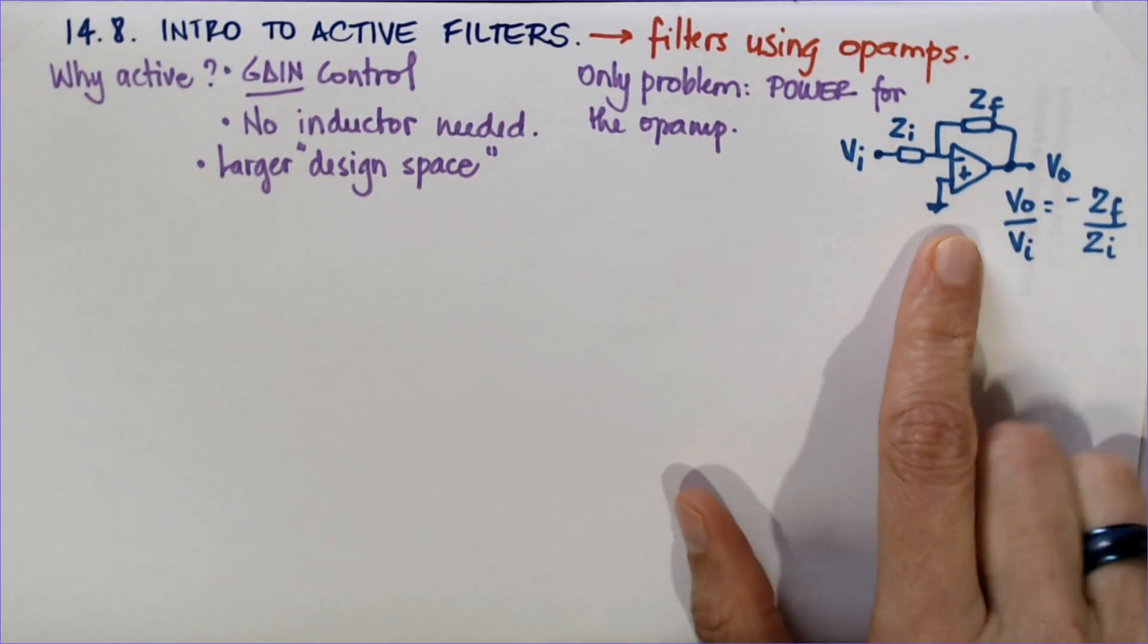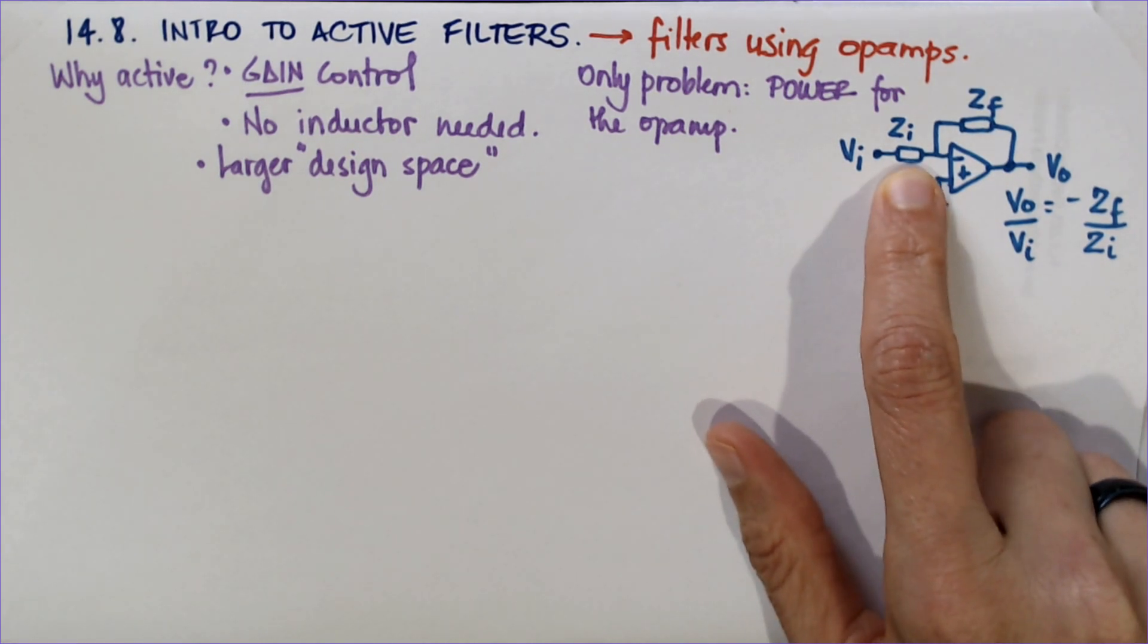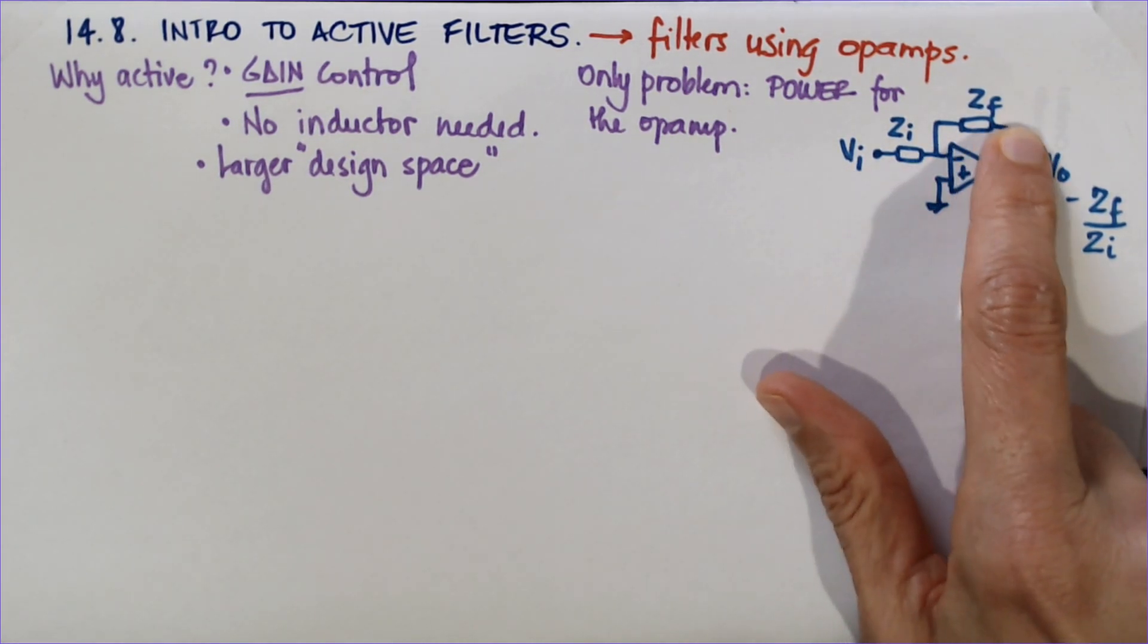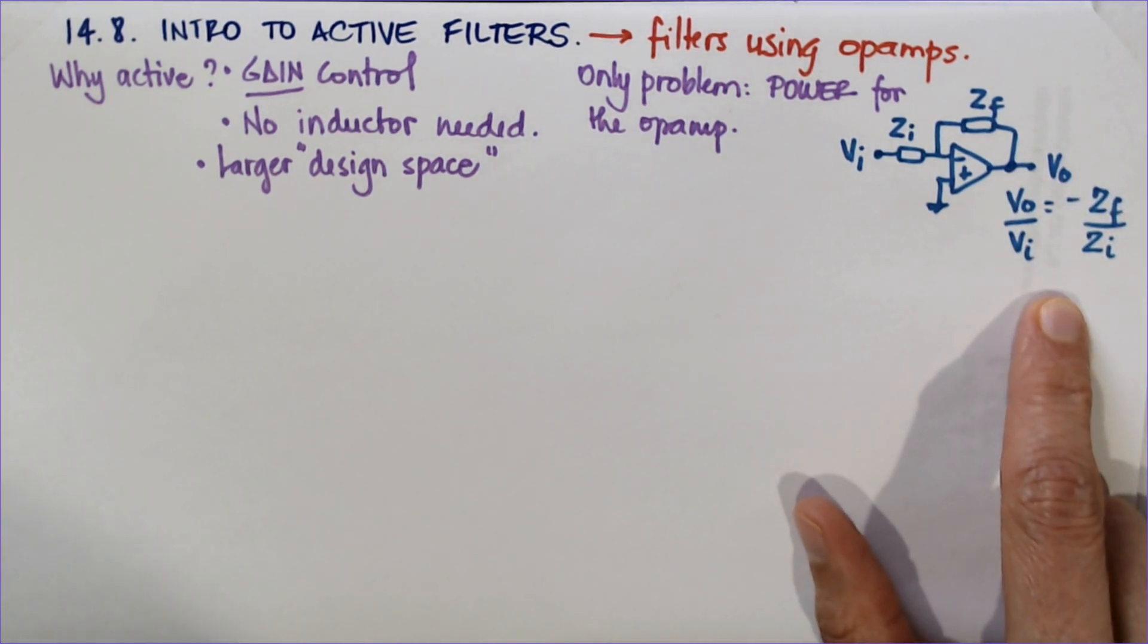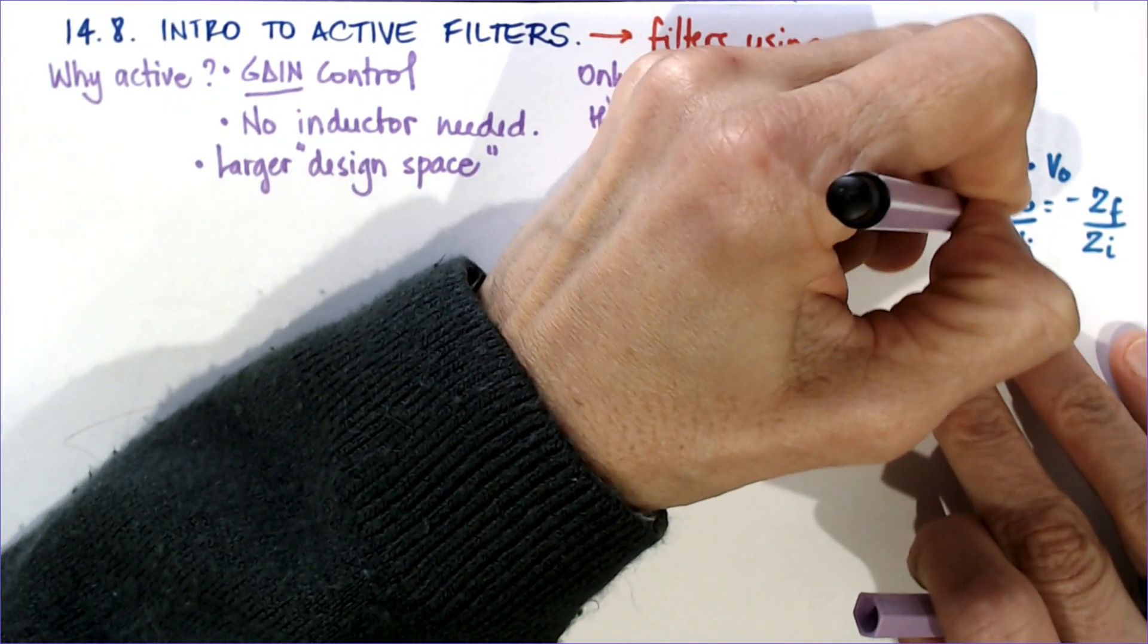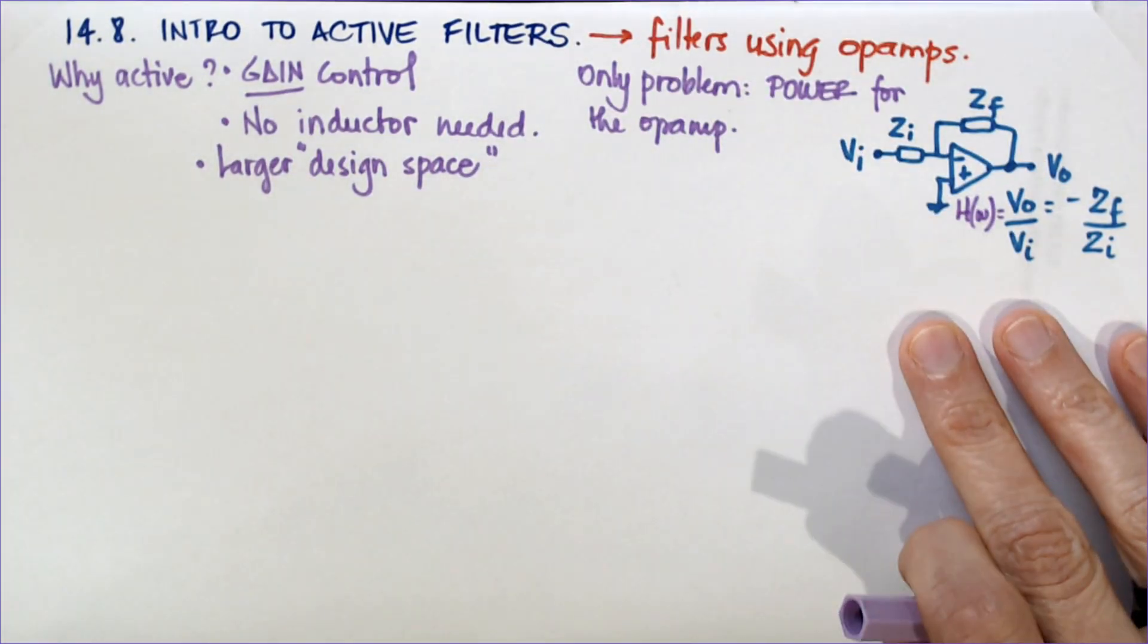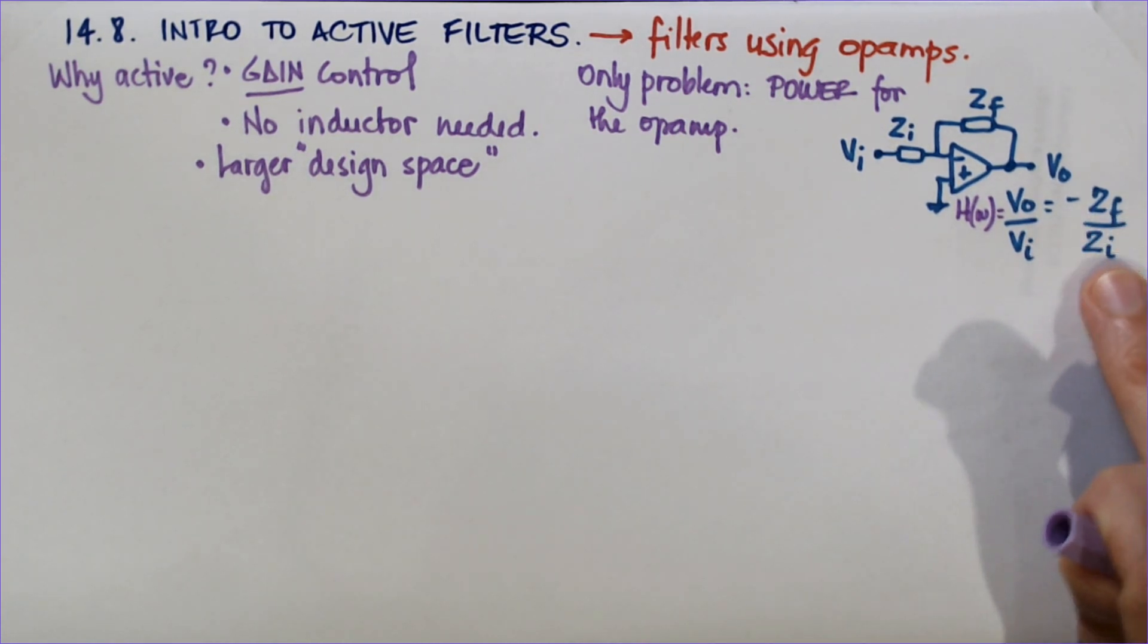In 285 we did a lot of inverting amplifiers that had resistors hooked up to the input and as feedback resistors, and we derived the transfer function even though we did not call it H of S or H of Omega. We called it output over input and it used to be minus RF over RI.